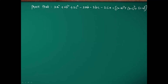Prove that 2a² + 2b² + 2c² - 2ab - 2bc - 2ca equals (a-b)² + (b-c)² + (c-a)², as a sum like that.